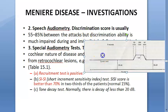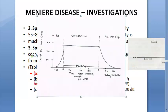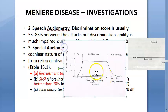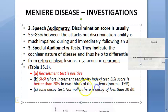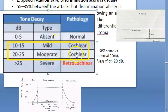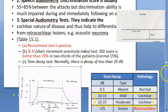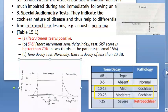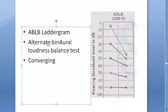In the tone decay test, a normal individual given a sound at their hearing threshold should be able to hear it for 60 seconds. In cochlear conditions, mild to moderate decay of 10–25 dB is seen. The ABLB laddergramme also shows convergence due to recruitment — the alternate binaural loudness balance test demonstrates this pattern.